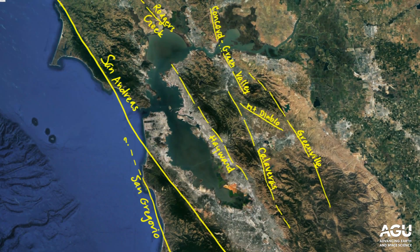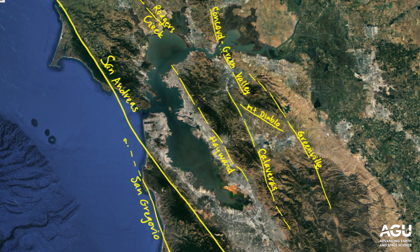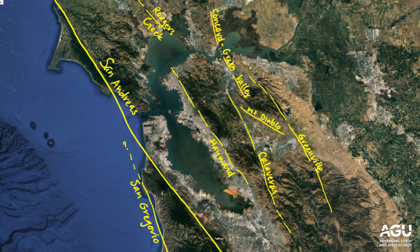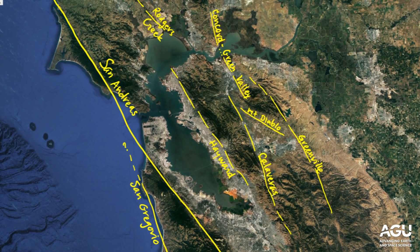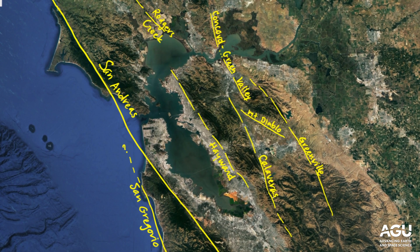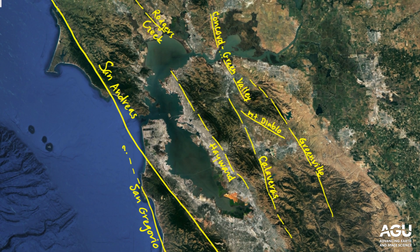Subsequently, the development of large strike-slip faults through the Bay area dissected the bedrock and caused the rocks to move past one another.